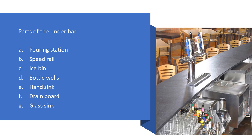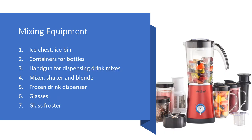The different parts of the underbar are the following: pouring station, speed rail, ice bin, butter wells, hand sink, drain board, and glass sink. Bar equipment can be classified into three: mixing, washing, and storage.